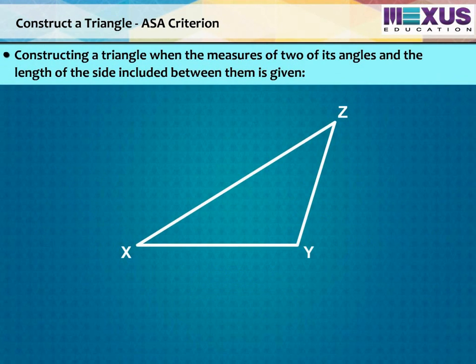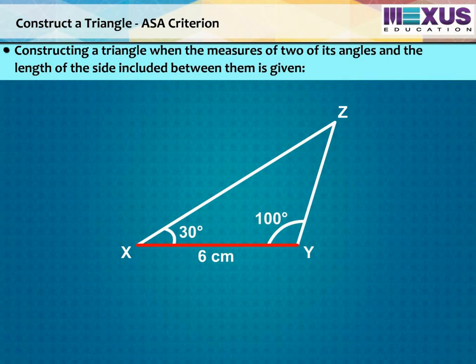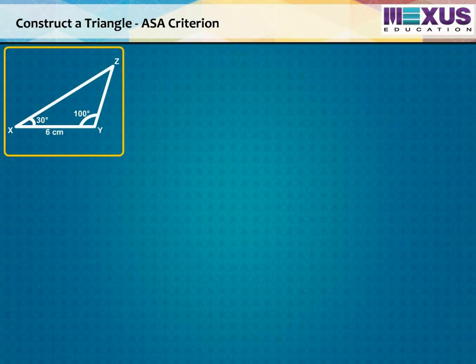To construct a triangle XYZ if its given parameters are measures of two angles, measure angle ZXY is equal to 30 degree and measure angle XYZ is equal to 100 degree and the included side as XY is equal to 6 cm. Let us first draw its rough sketch.